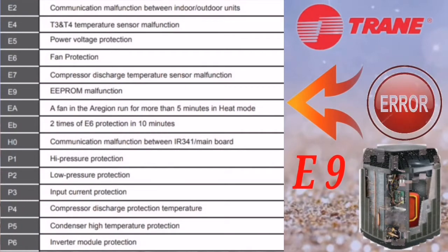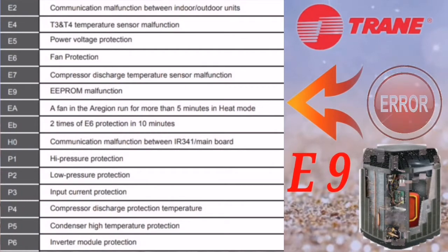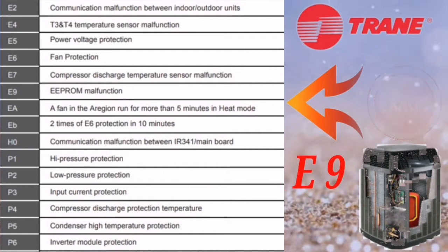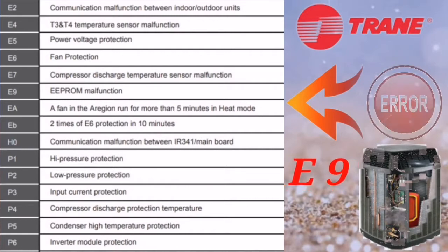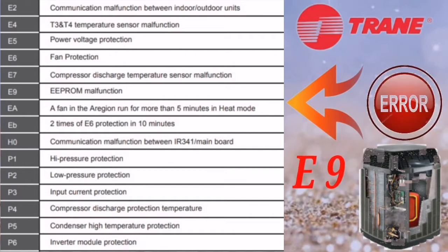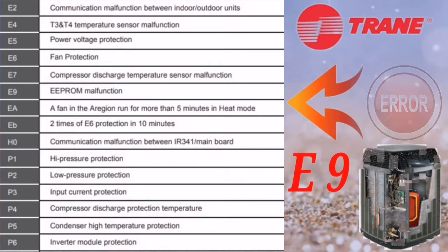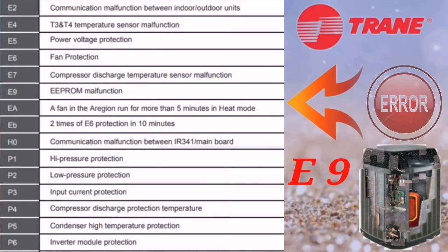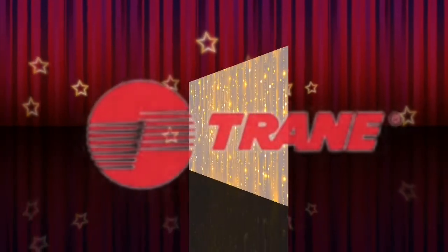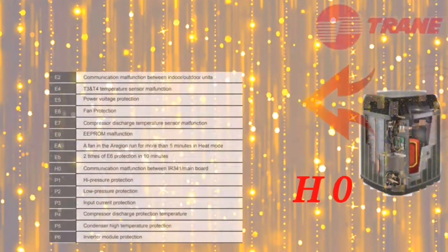The next error code is E9, which means EEPROM malfunctioning. In the outdoor unit, the EEPROM stores all the data from the factory. Without wasting time checking other components, directly change the outdoor PCB and your unit will be in working condition.